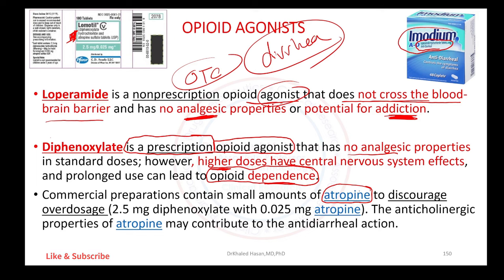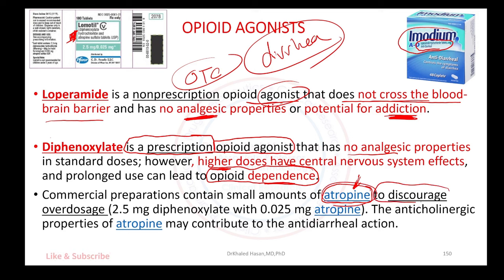The purpose of adding atropine is this: when a patient tries to use large doses of diphenoxylate to achieve euphoria or for addiction purposes, the large dose of atropine will also enter the body and cause unpleasant anticholinergic side effects. These annoying symptoms from the atropine will discourage the patient from continuing to use the medication at abusive doses.